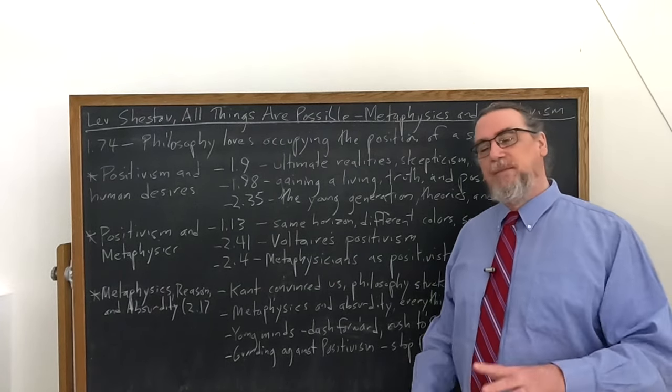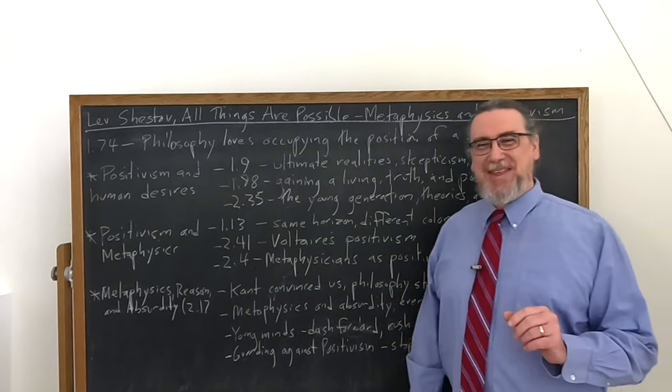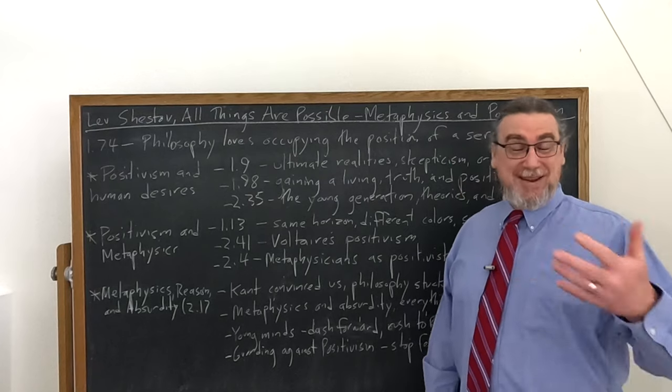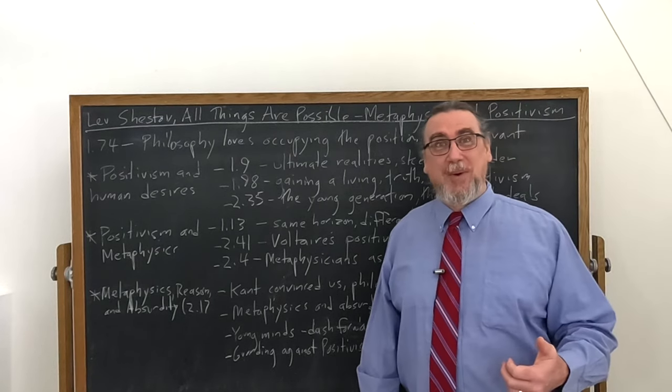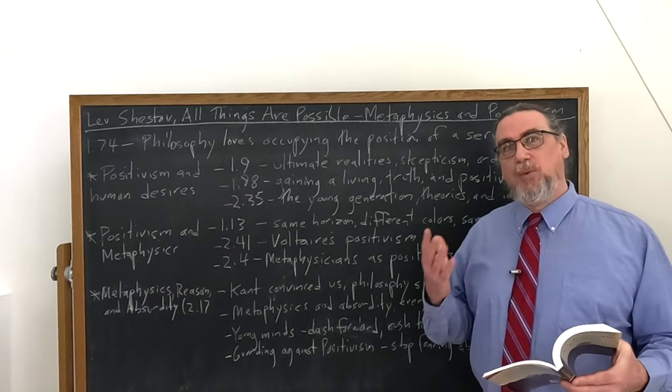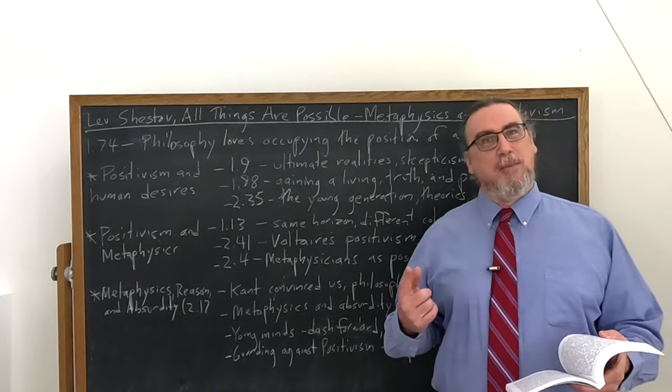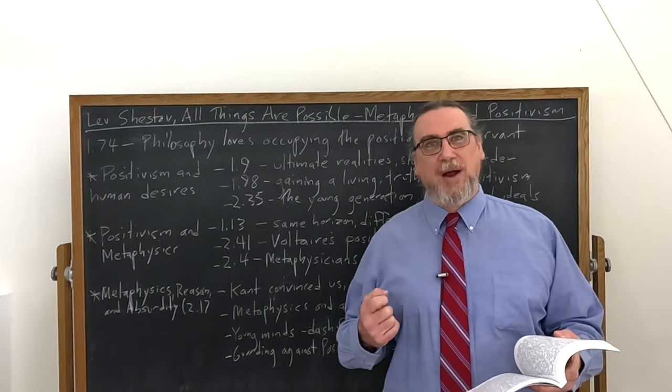Credo quia absurdum comes from the Middle Ages. This is the famous statement often attributed as his summary to Tertullian. Obviously, Tertullian wrote a lot more than just simply that line. But it is a viewpoint: I believe because it is absurd. And he says, where can we find modern examples of this? And he brings up somebody who we talked about already, Friedrich Nietzsche.